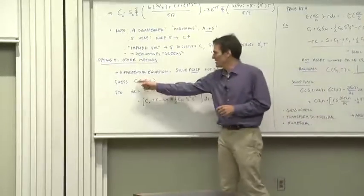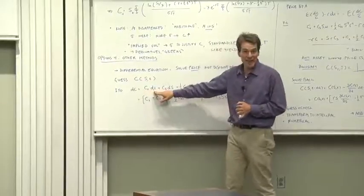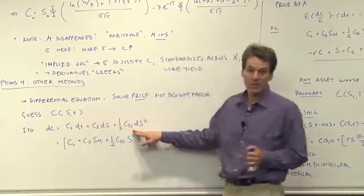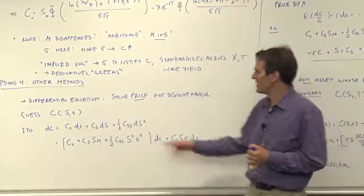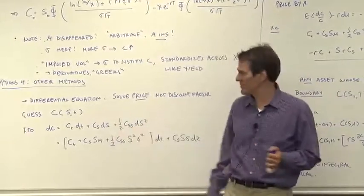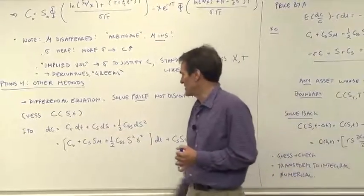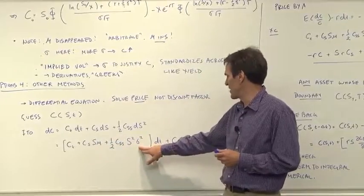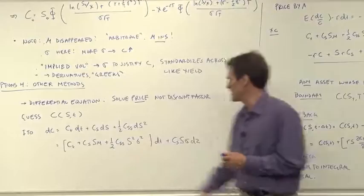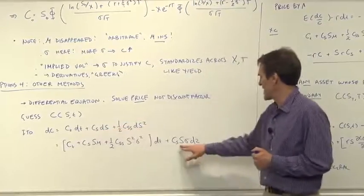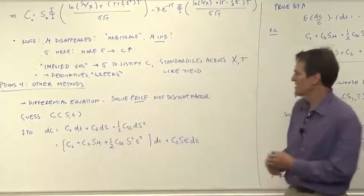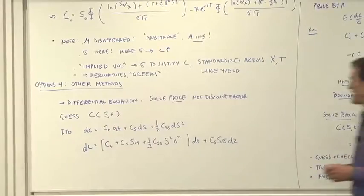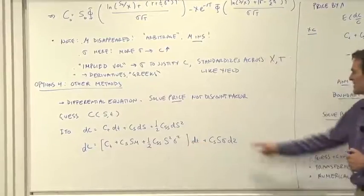Just use Ito's lemma. Let's take the total derivative. We've got the derivative with respect to time, the derivative with respect to the stock price, and the Ito term, one-half second derivative with respect to stock price. We still have the stock price as a geometric diffusion, mu dt plus sigma dz. So let's write that as the ds term is s times mu. ds squared is s squared times sigma squared. So those are all the dt terms. And then from this term here, we have a cs times the diffusion term of the stock price. So dc, if that's the functional form, then the change in the call option price must look like that.